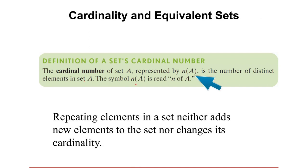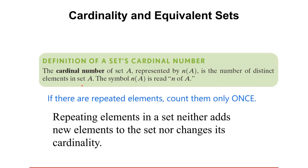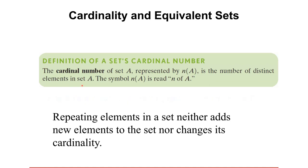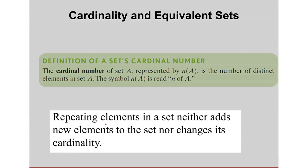This symbol here is read N of A. You just have to count all the distinct elements. If there are elements that are repeated, you just have to count them once. Repeating elements in a set neither adds new elements to the set nor changes its cardinality.